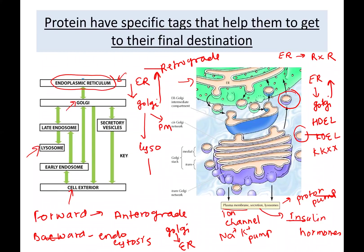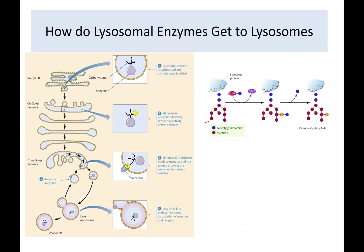These are called retrieval tags. If a protein needs to go to lysosomes, it must have a mannose-6-phosphate tag. Here you can see a protein in the ER and a vesicle budding off carrying a lysosomal enzyme. When it gets to the Golgi, mannose is phosphorylated at position 6 — that's why it's called mannose-6-phosphate. It then binds to a receptor at the membrane, travels in a vesicle, fuses with the late endosome.